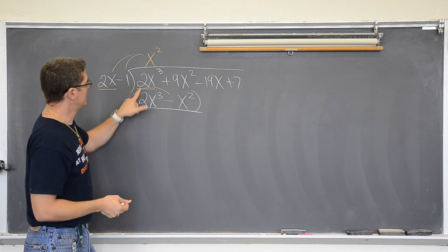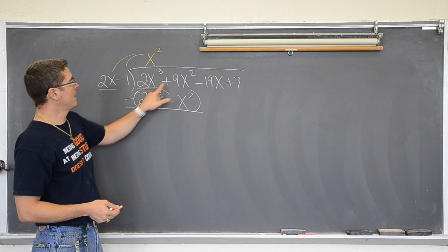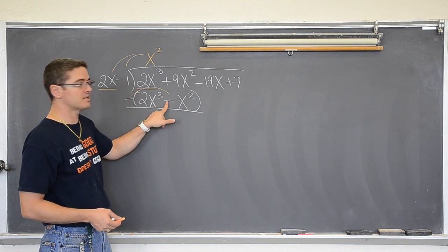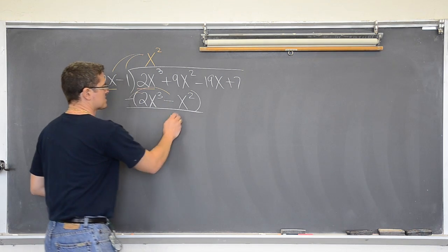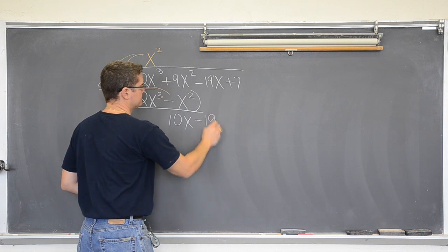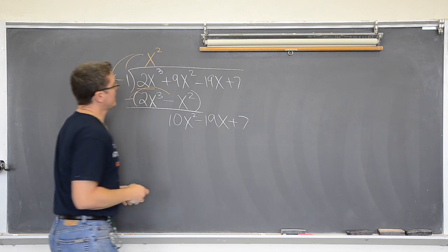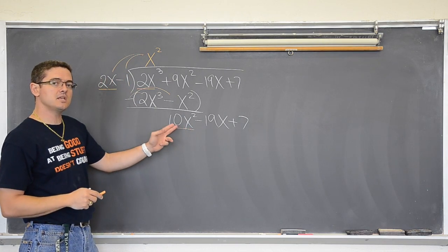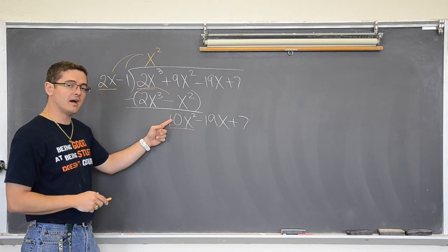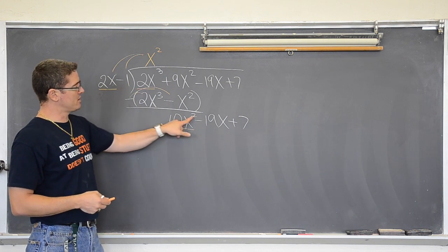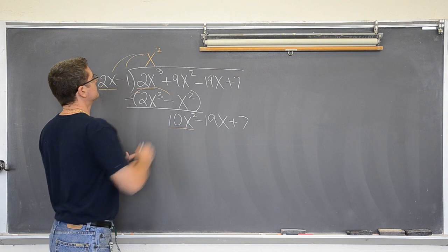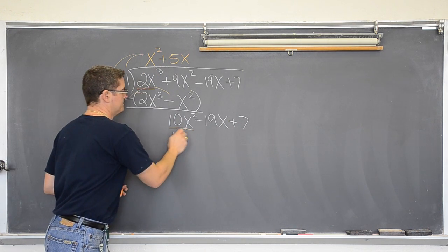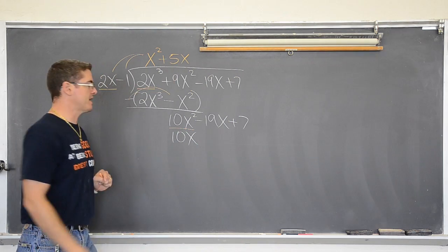2 minus 2 is 0. And 9 minus negative 1 is 9 plus 1, which gives 10x². I am going to bring everything else down. Now I want to make this first term match 10x². How do you get 2x to equal 10x²? Multiply by 5 and another x to raise the exponent, so we multiply by 5x. Then 5x times 2x is 10x², and 5x times −1 is −5x.